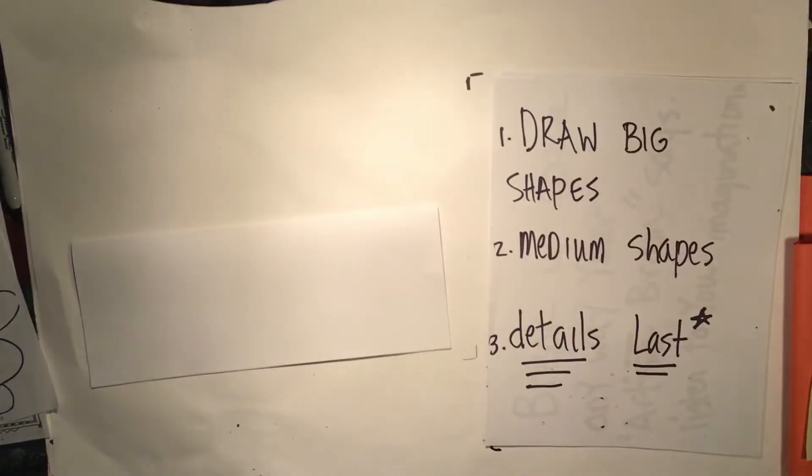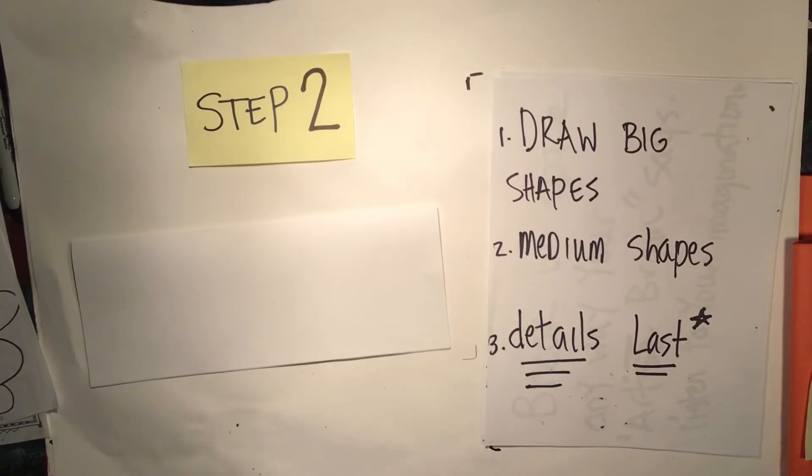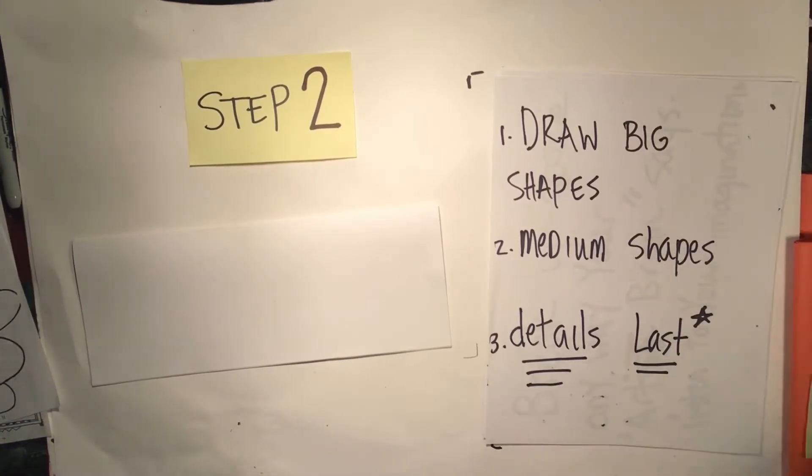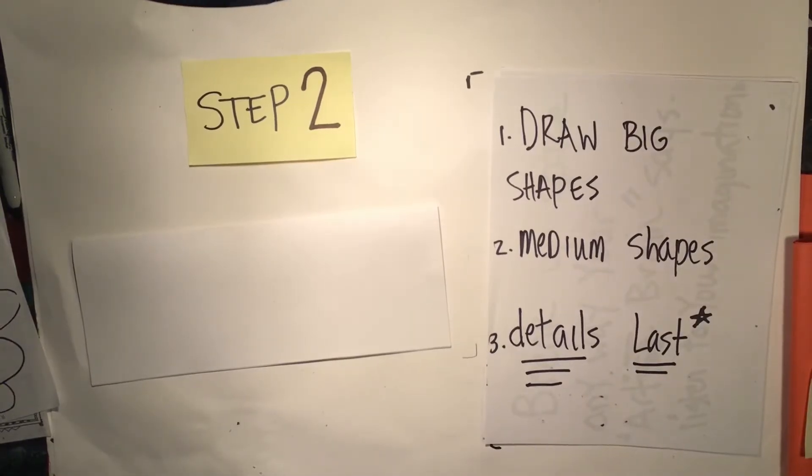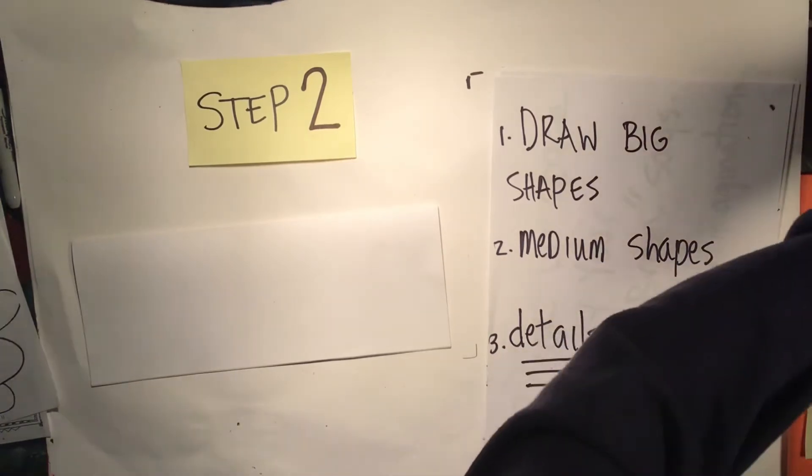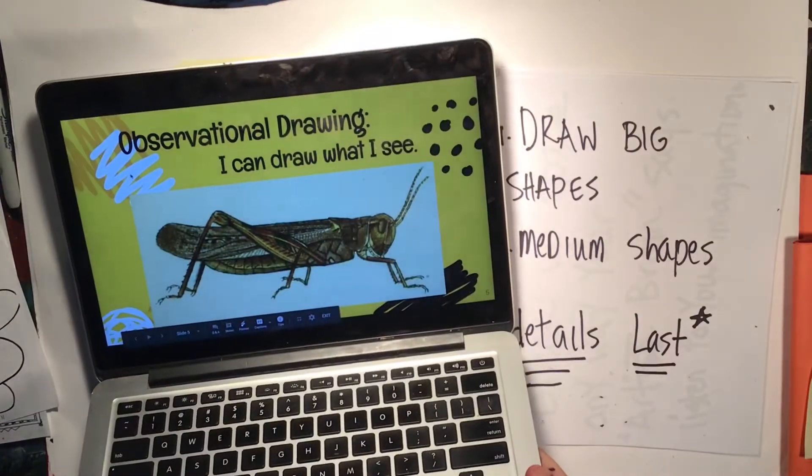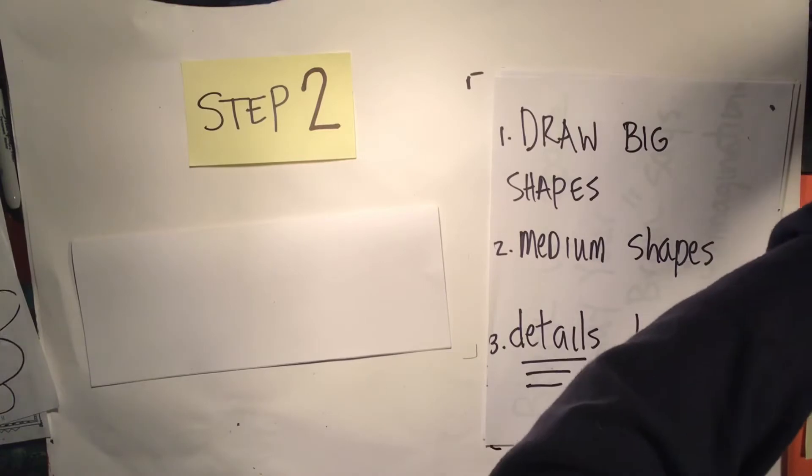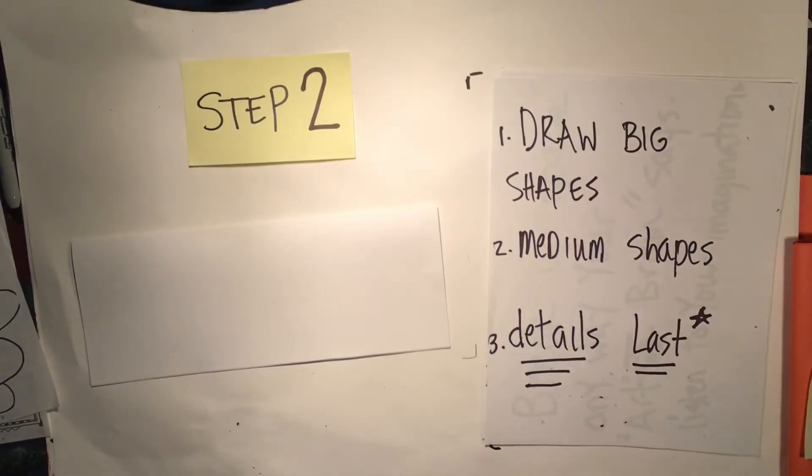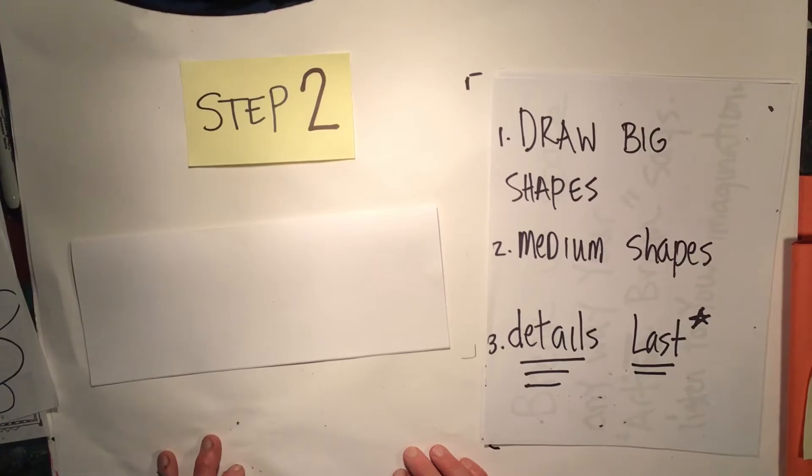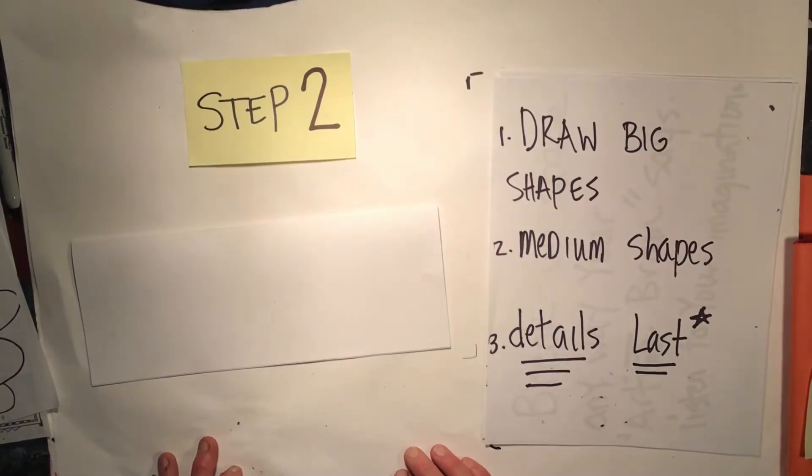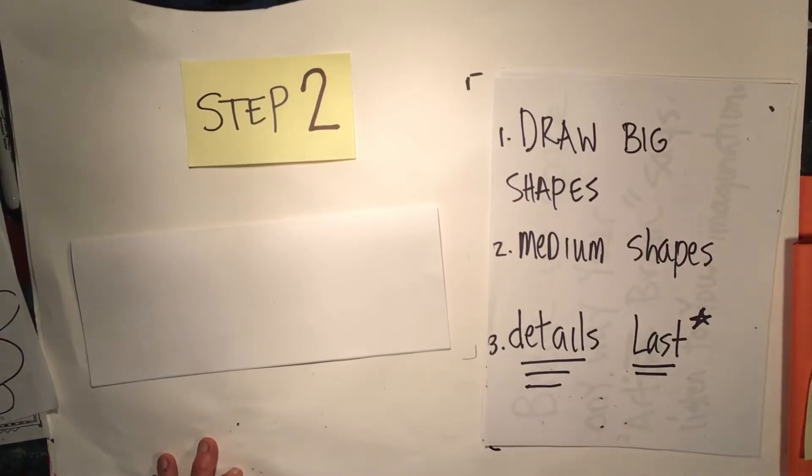Step two. This is where we get to begin to practice our observation drawing. Make sure you have a pencil ready for your tool. And you also need slide five of the slideshow where it showed that realistic looking cricket. You're going to want to look at that while you draw.